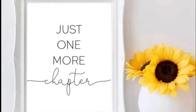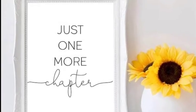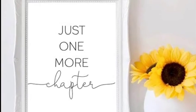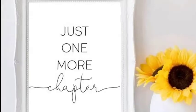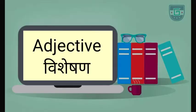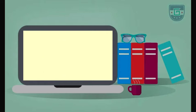Hello everyone, welcome back to my YouTube channel. Just one more chapter. Today I will explain you all adjectives with its examples. Adjective ka meaning hota hai vishishan. Let's start.